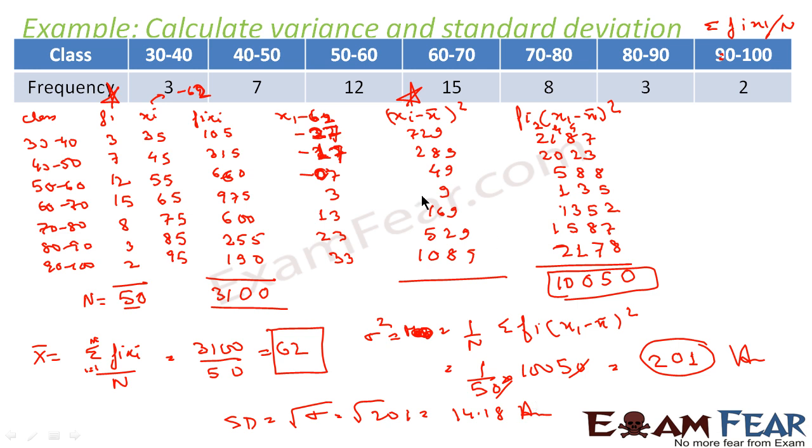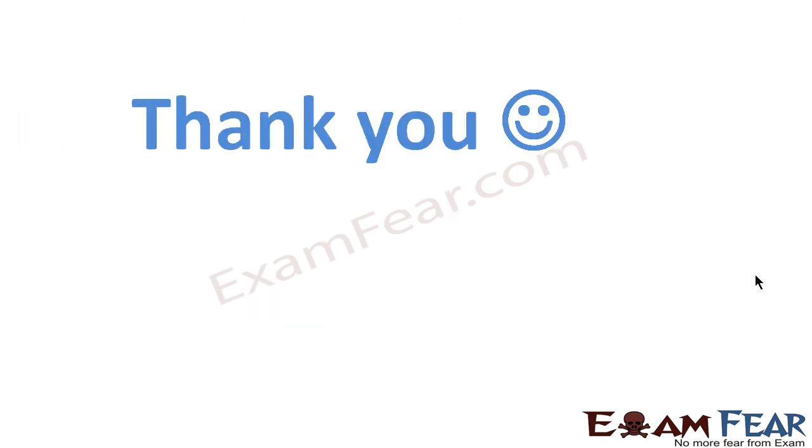What we have done: First, we found the value of mean by getting fi xi's, adding them, and finding the mean. Once we have the mean, we found the deviation of xi's from mean, squared it, then found fi times square of deviations. We added these, got 10,050, then used the variance formula to get 201. Once we have variance, we got standard deviation as root of variance, which is 14.18.